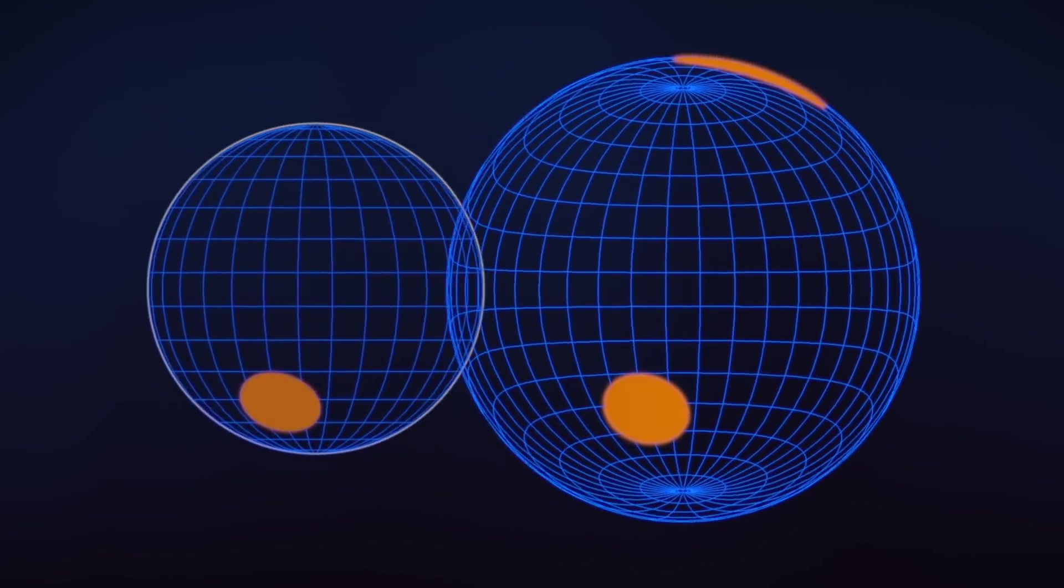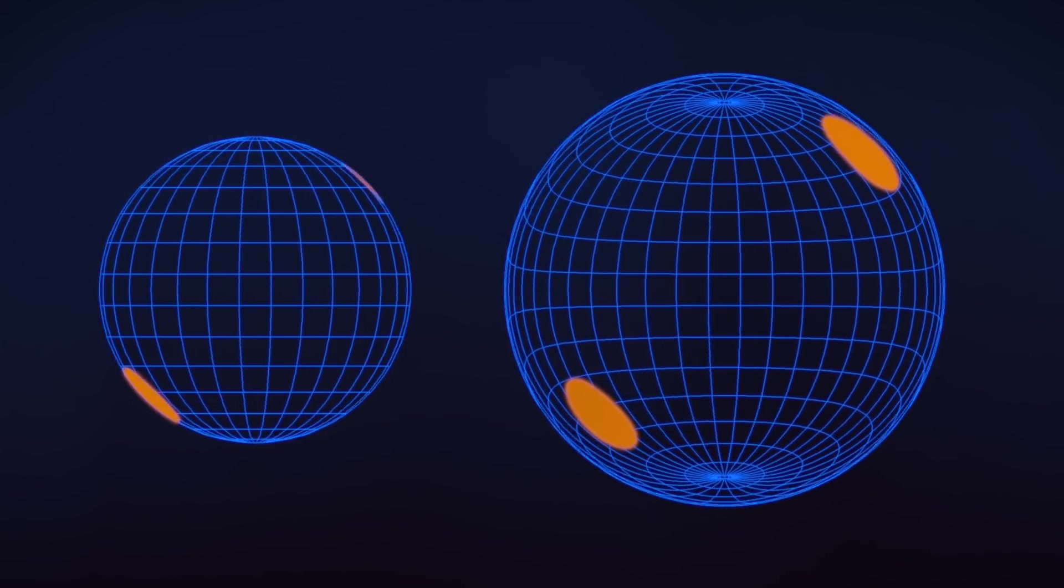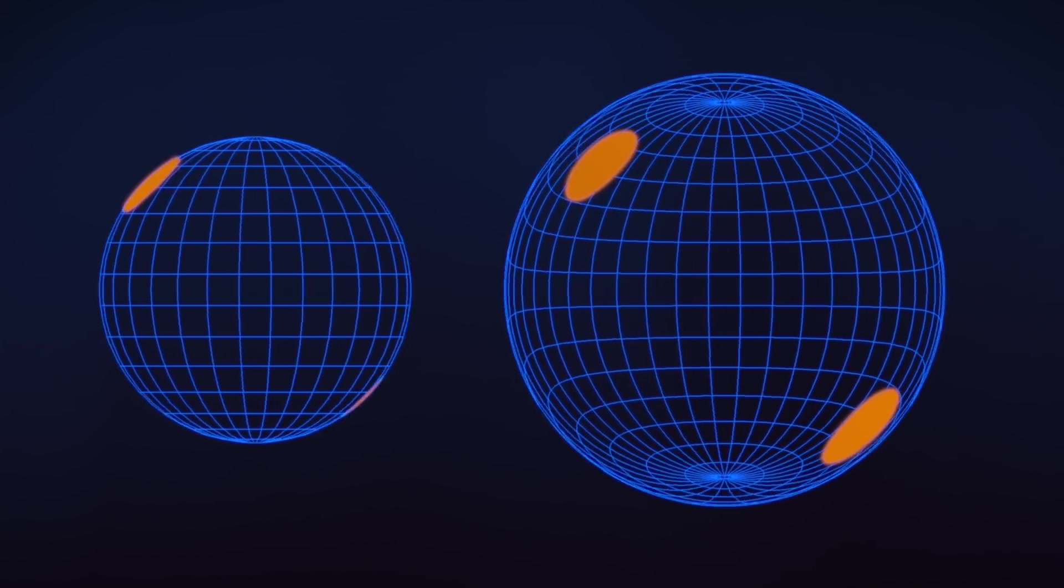If the pulsar's mass is low, the spots disappear when they rotate to the far side. But if the mass is high enough, the hot spots may never completely disappear.